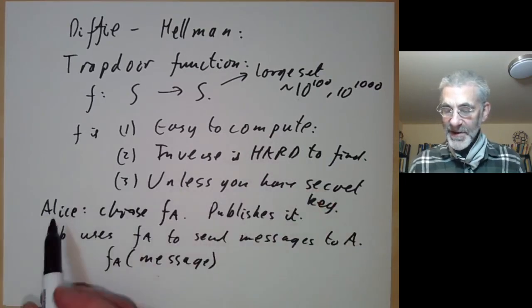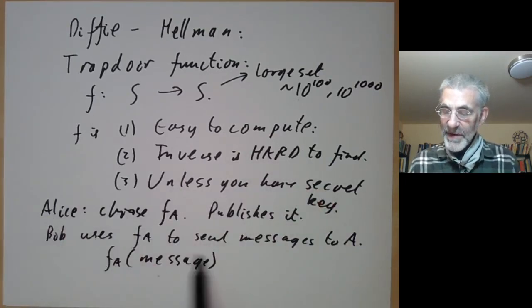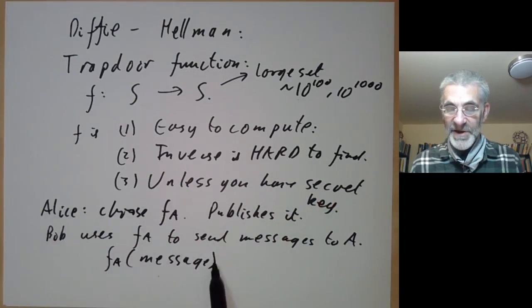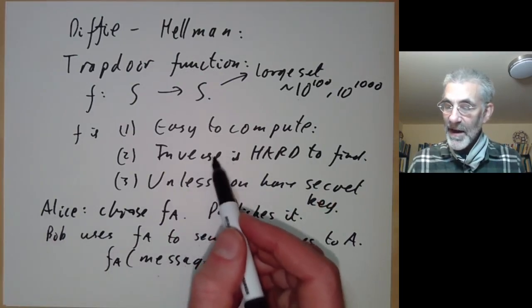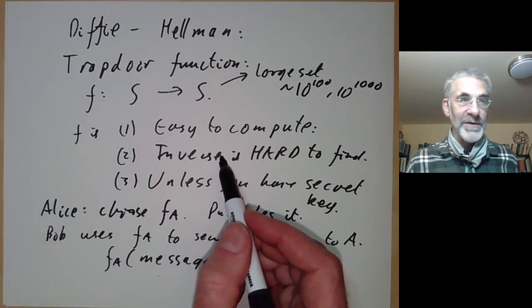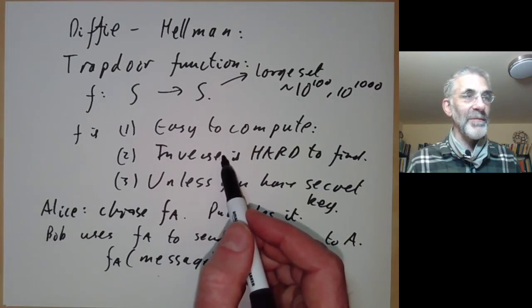What Bob does is he takes a message, applies f_A to it, and sends that to Alice. Eve can read f_A of the message but can't decode it because this function f_A is very hard to invert—it needs massive amounts of computing power.